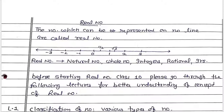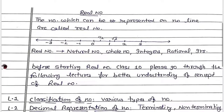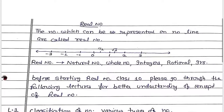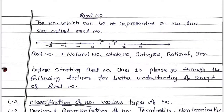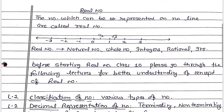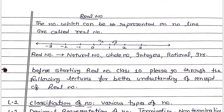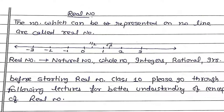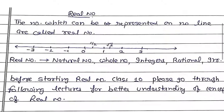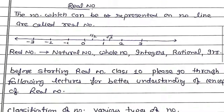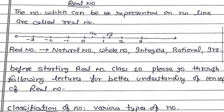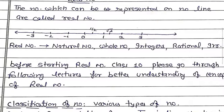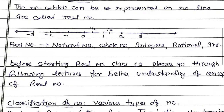Hello dear students, now we are starting our first chapter of Class 10th which is Real Numbers. Real number kya hota hai — the numbers which can be represented on a number line are called real numbers. Aise numbers jinko number line pe represent kar saktay hain, woh sare real numbers hoongay.